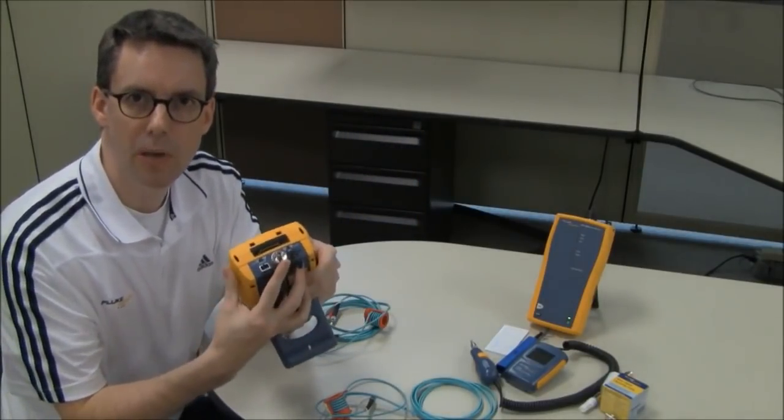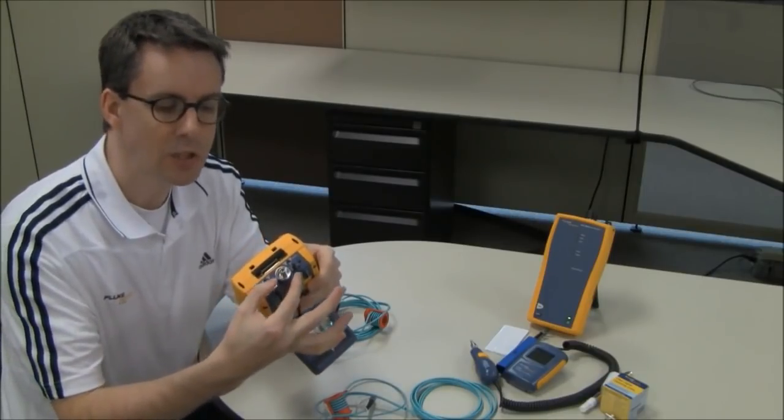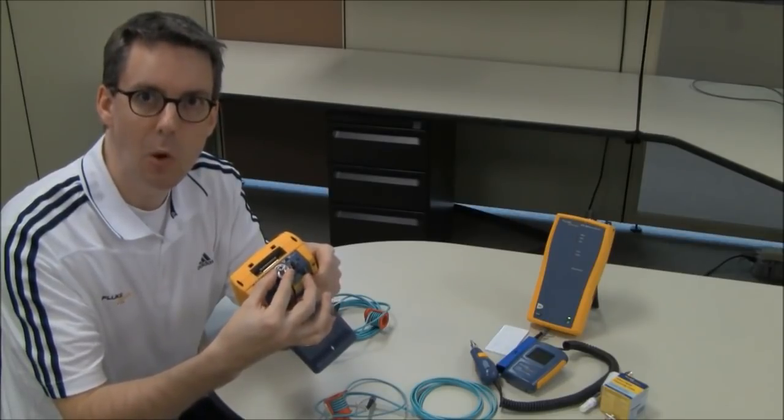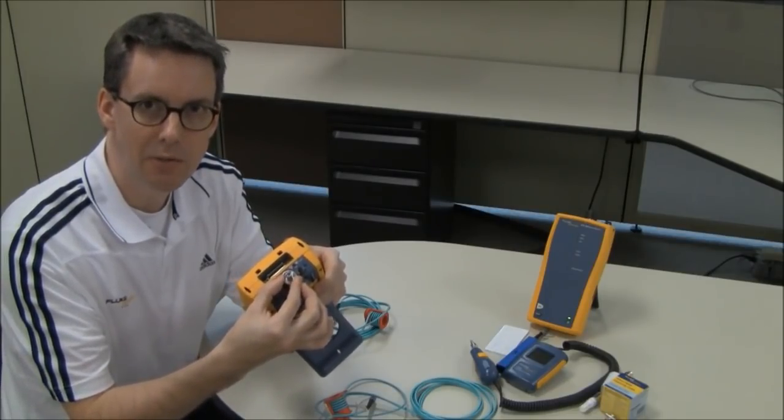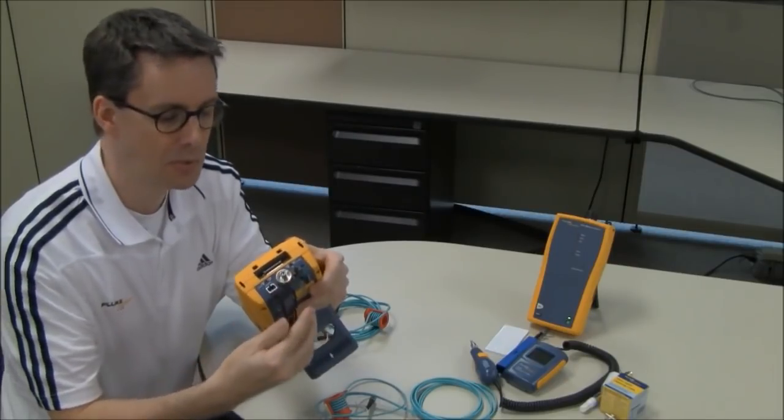These are the Series 2 fiber modules with the interchangeable adapters. I've already changed the SC adapter to an ST adapter. That's going to allow me to do a one-jumper reference and avoid any concerns about negative loss readings ending up in my test results.